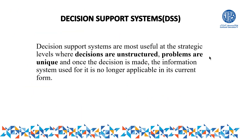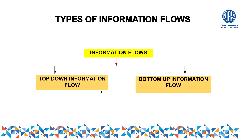Decision support systems are most useful at the strategic level — the high level where decisions involve unstructured problems that are unique. Once the decision is made, the information system used for it is no longer applicable in the same format in the future. This is because the problem happened for the first time and a unique solution was found, which is why DSS is totally unstructured. In the next video, we will talk about the types of information flow in accounting.